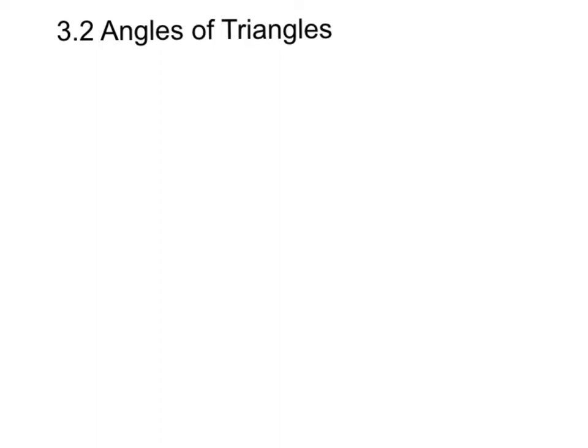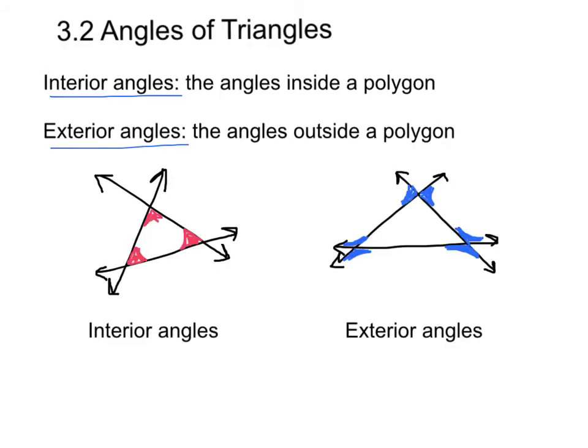Section 3.2 is over angles of triangles. While most of this you have done, some of this is going to be new. So we have two vocabulary words you first need to write down: interior angles and exterior angles.